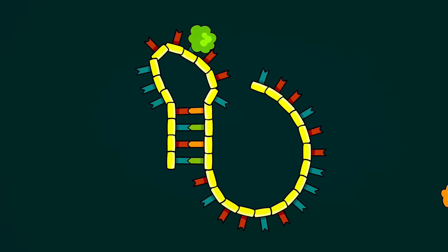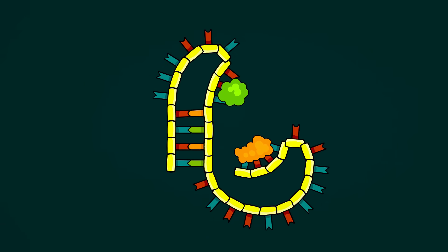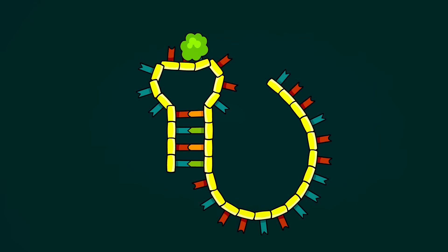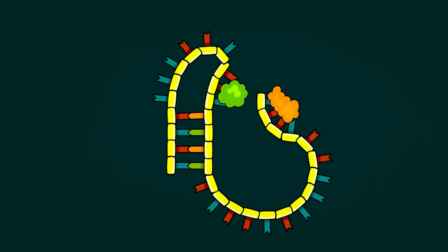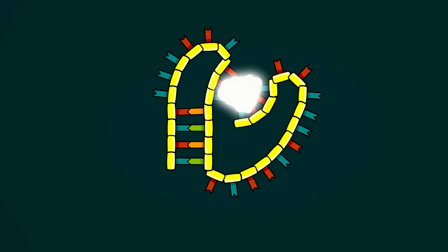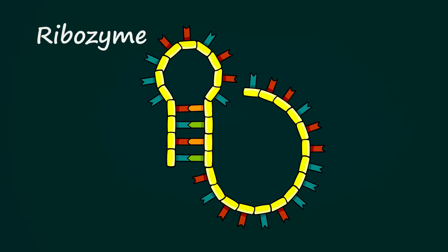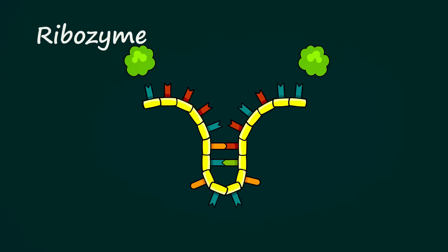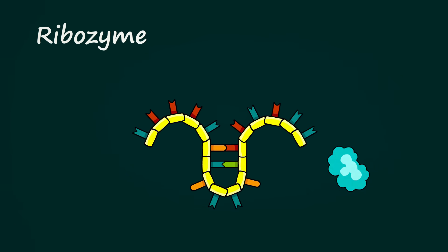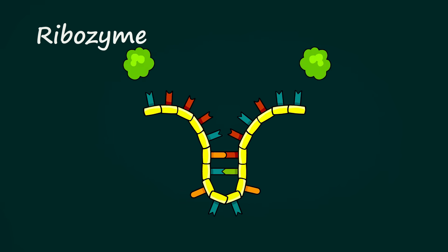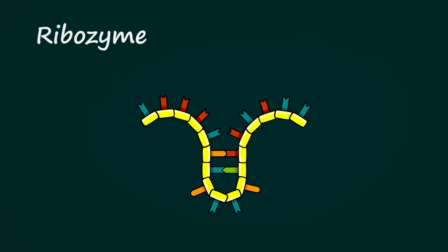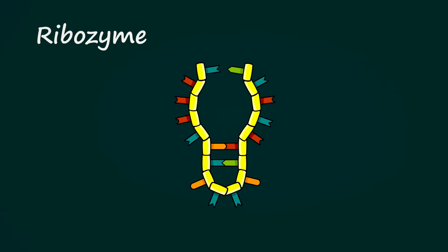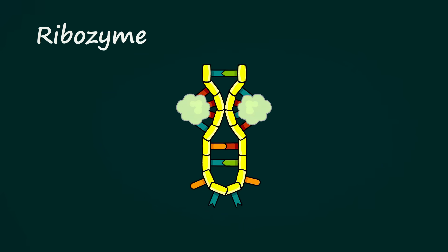The end result is a complex shape with certain sticky bases pointing outward because they weren't able to find partners. These sticky outward facing bases can cause unique chemical reactions by interacting with other molecules in their environment. A folded chain of RNA capable of guiding a specific chemical reaction is what we call a ribozyme.